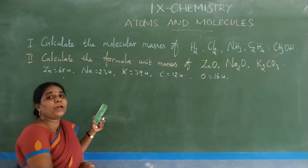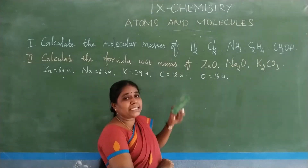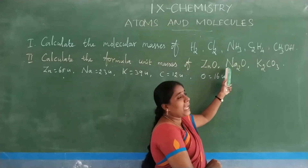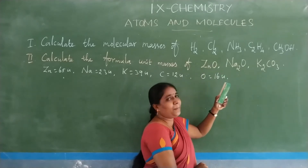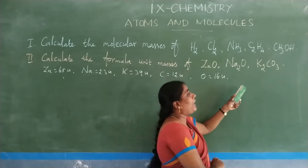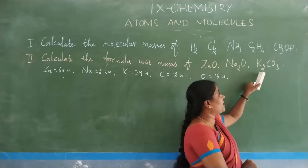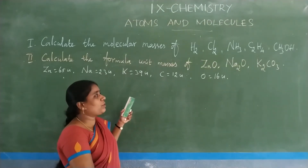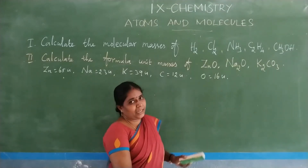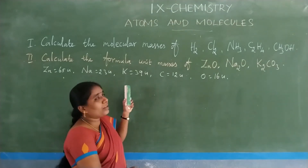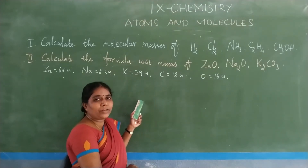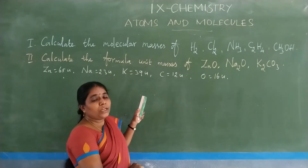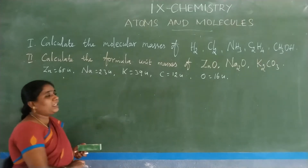For ionic compounds, we identify the ions present. For zinc oxide: Zn²⁺ and O²⁻. For sodium oxide: 2 Na⁺ and O²⁻ (because oxygen's valence is 2). For potassium carbonate: 2 K⁺ and CO₃²⁻. So for ionic compounds, we write the positive and negative ions, then calculate the formula unit mass — the unit is also U, unified mass.